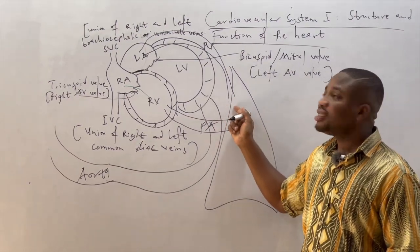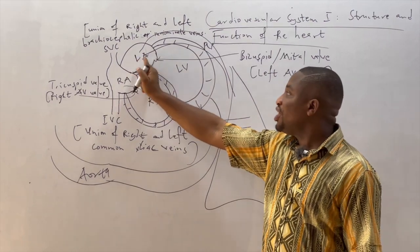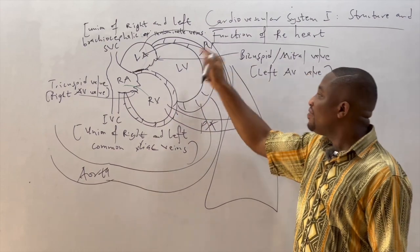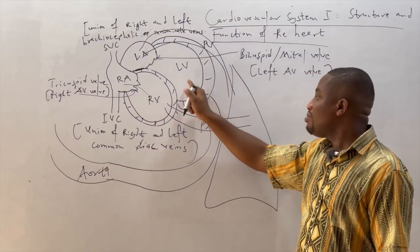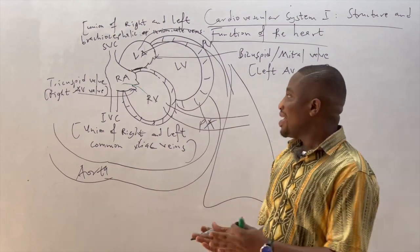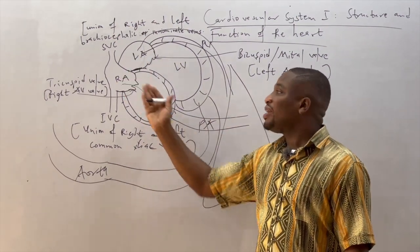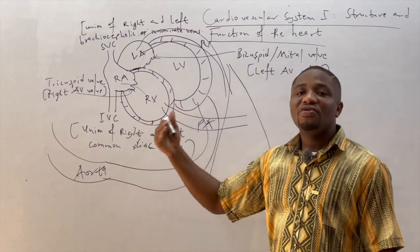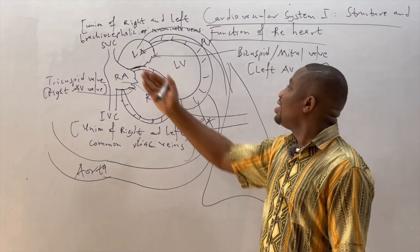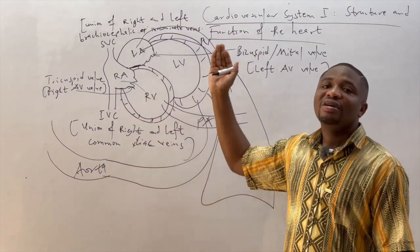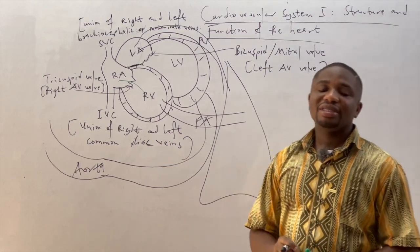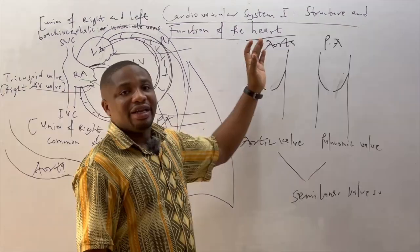Once oxygenated, the pulmonary vein drains the oxygenated blood from the lungs into the left atrium. The left atrium drains the blood through the mitral valve into the left ventricle, and the left ventricle contracts to pump the blood through the aorta into the system. So the right side of the heart — right atrium and right ventricle — contains deoxygenated blood, whilst the left side — left atrium and left ventricle — contains oxygenated blood.